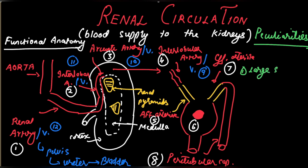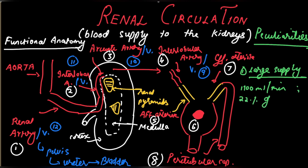Now for the peculiarities. First, the kidney has a very large blood supply. The kidney is the organ for homeostasis and receives 1100 ml per minute, or roughly 22 percent of the cardiac output.